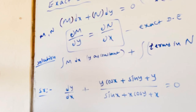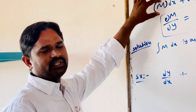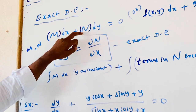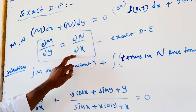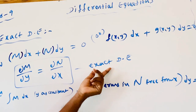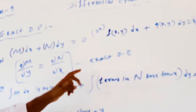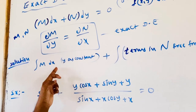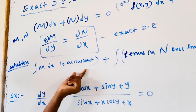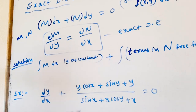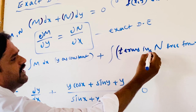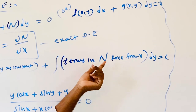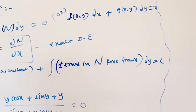That means: by differentiating M with respect to y and N with respect to x, if both results are the same, then it is an exact differential equation. Its solution is: integral of M dx (treating y as constant), plus integral of terms in N that are free from x, into dy, equals constant.